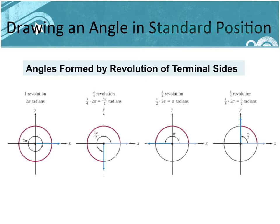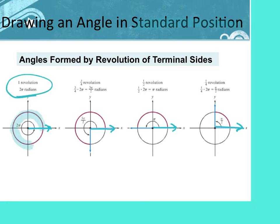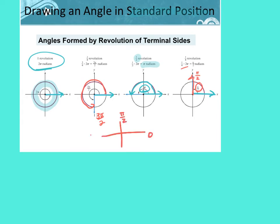In standard position, angles start on the right side of the x-axis. Going all the way around is 2π. Half the circle is π, a quarter is π/2 at the top, and three-quarters is 3π/2 at the bottom. These are called the quadrant angles: 0 on the right, π/2 at the top, π on the left, 3π/2 on the bottom, and 2π all the way back around.